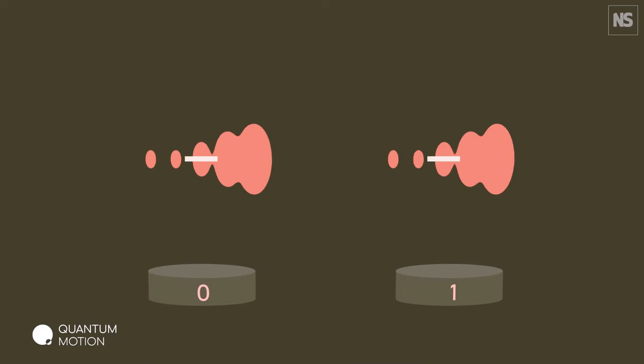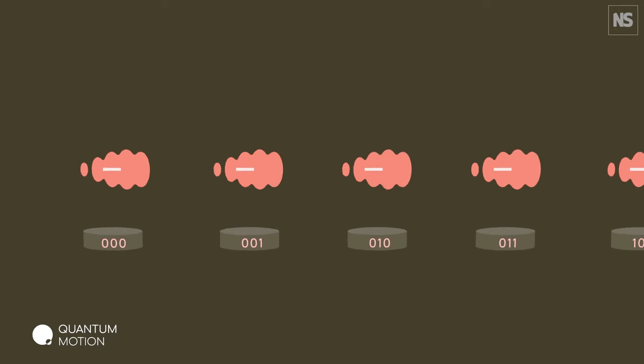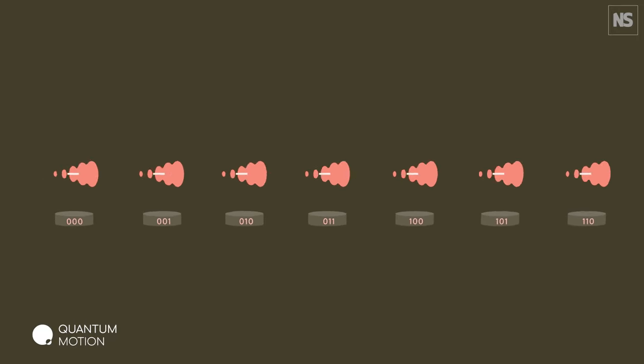Qubits can also be inextricably linked together using a phenomenon called quantum entanglement. The result is that a series of qubits can represent different things simultaneously.